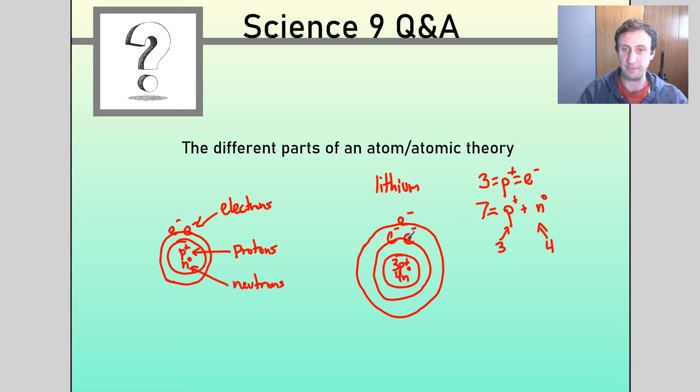And then second energy level can hold up to 8, but I only have 1 electron left, so I'll put that right there. So I have 2 electrons, which is the max for my first energy level. I have 1 left over, which goes into the second energy level. That can hold a max of 8. The third can hold 8 as well. So that's the Bohr model for lithium.